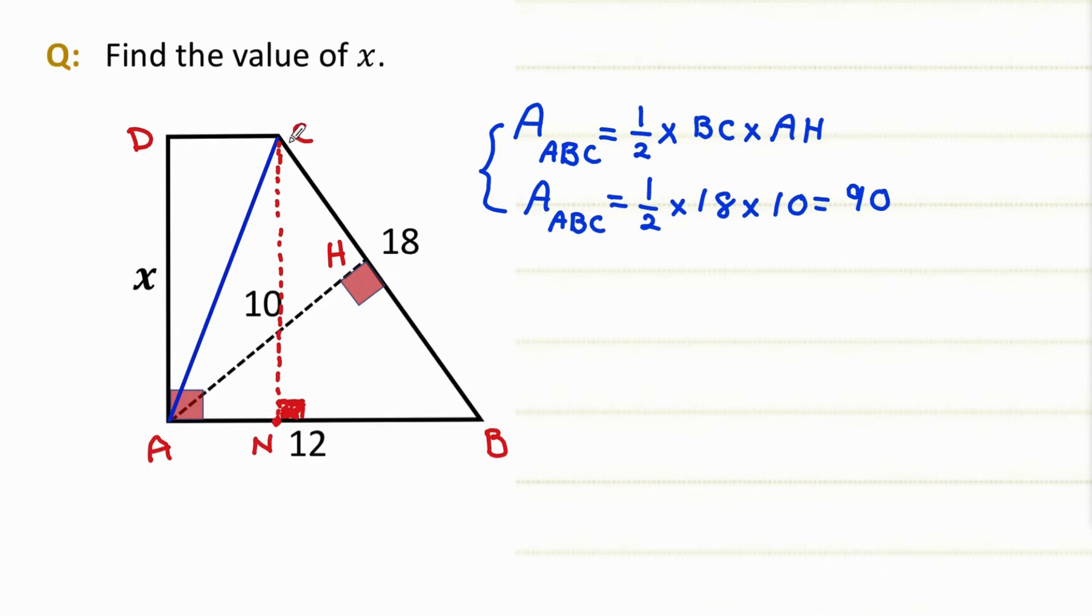So CN and DA are perpendicular to AB. And the length of both lines is the same. So CN is equal to AD, and this is x.